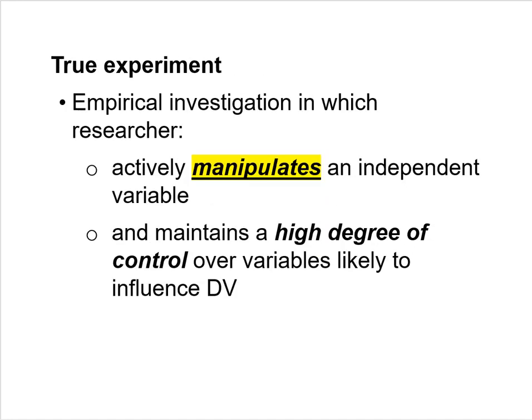A true experiment is an empirical investigation in which the researcher actively manipulates an independent variable and maintains a high degree of control over variables likely to influence the dependent variable. One of the most important characteristics of a true experiment is that the researcher actively manipulates the independent variable. The way we typically manipulate a variable is through random assignment to conditions.